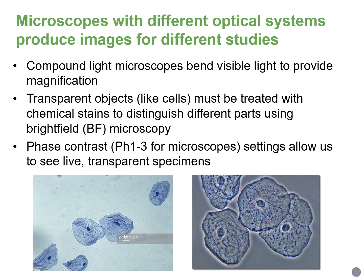Most of the microscopes you've encountered are probably compound light microscopes that bend visible light to magnify your specimen. The greater or stronger the objective lens you use, the more bending of light is happening. Most cells are transparent — they don't have natural color — so in order to see them under the microscope, we have to stain them using different types of dyes or stains.